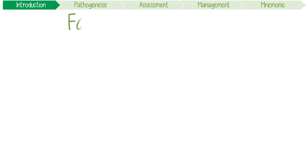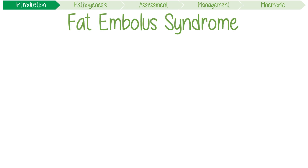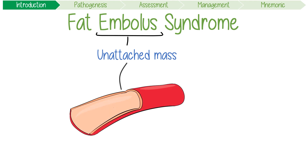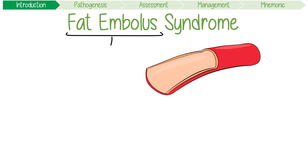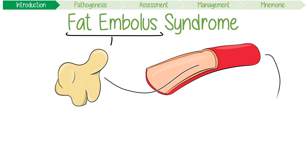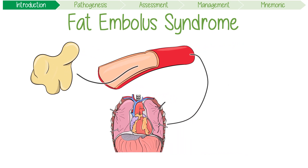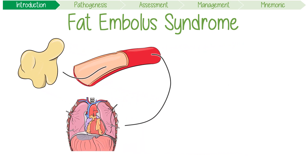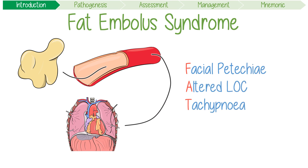Let's break down the phrase fat embolism syndrome. An embolus is an unattached mass that travels through the circulation and can create blockages. Accordingly, a fat embolus is a fat globule that enters the blood and reaches the pulmonary circulation. This results in the clinical syndrome known as FES, which has the classic triad of FAT PE features: facial petechiae, altered level of consciousness, and tachypnea.